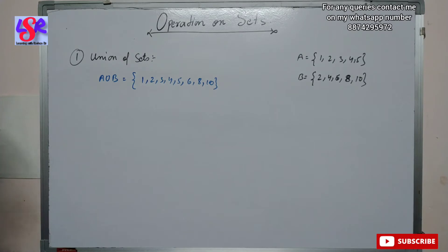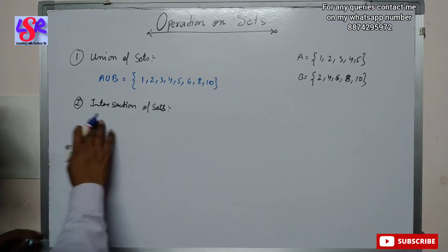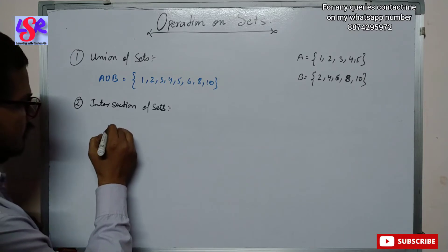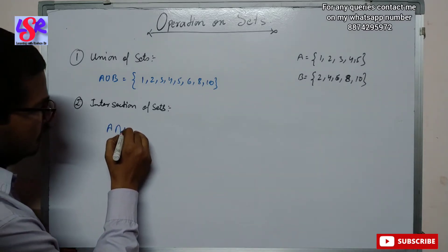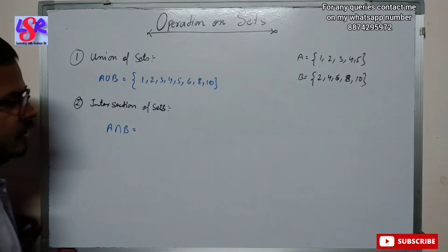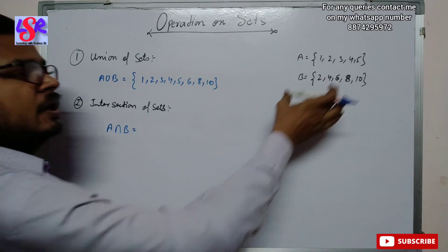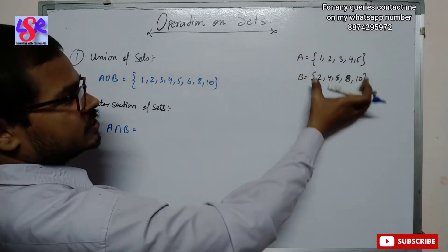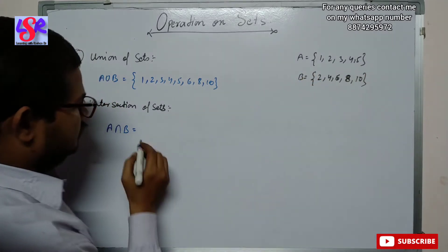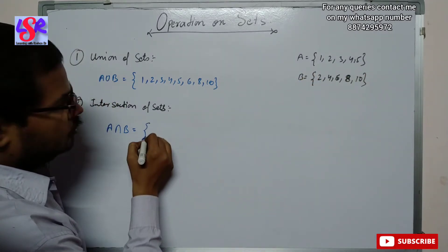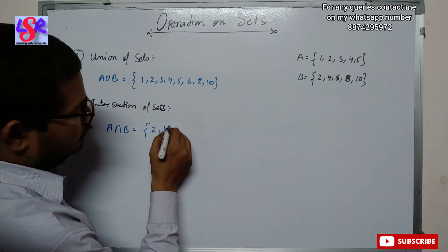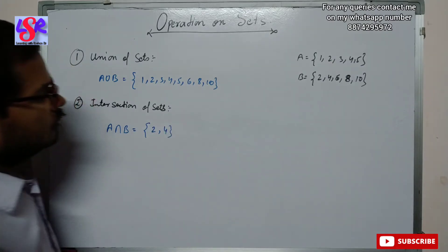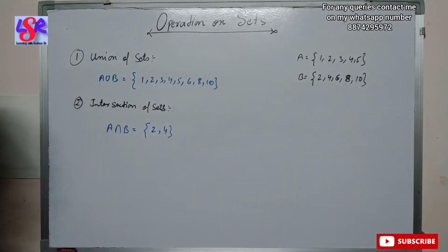The next one is intersection of sets. In intersection of sets, we form a symbol like an inverted U, written as A ∩ B. In this case, we write only the elements common to both sets. In Set A and Set B, the common elements are 2 and 4, so A ∩ B = {2, 4}.